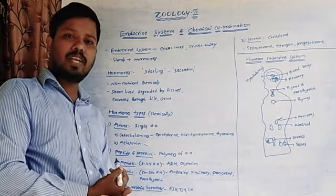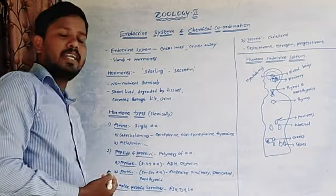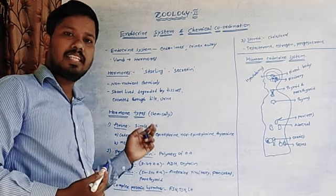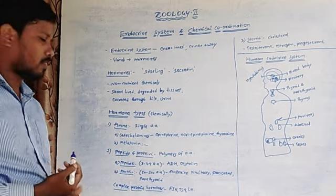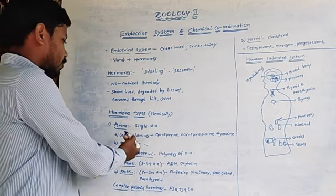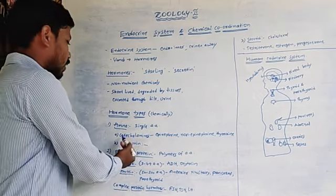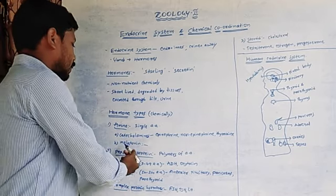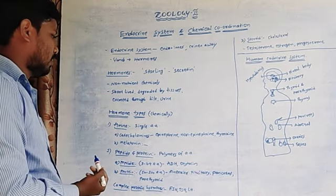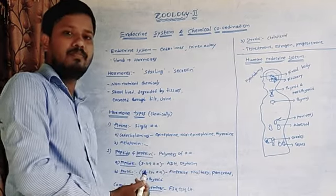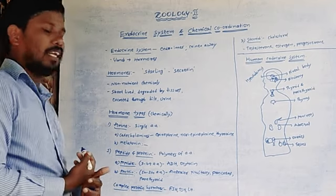Amine hormones are derivatives of single amino acids. Amine hormones can be divided into two types: catecholamines and melatonin. Catecholamines include epinephrine, norepinephrine, and thyroxine. The other type is melatonin.